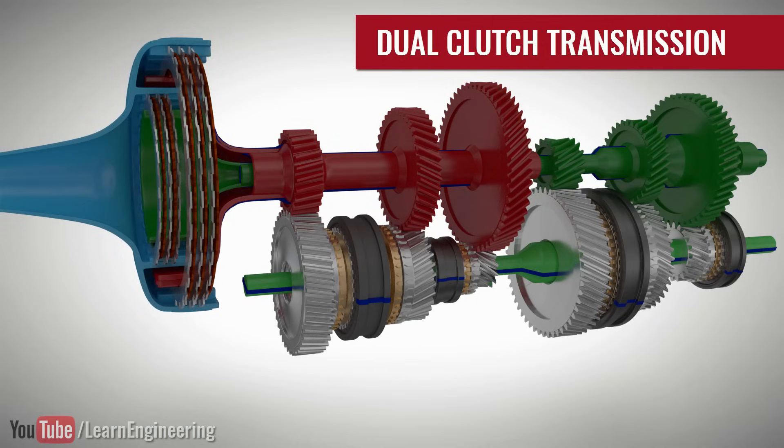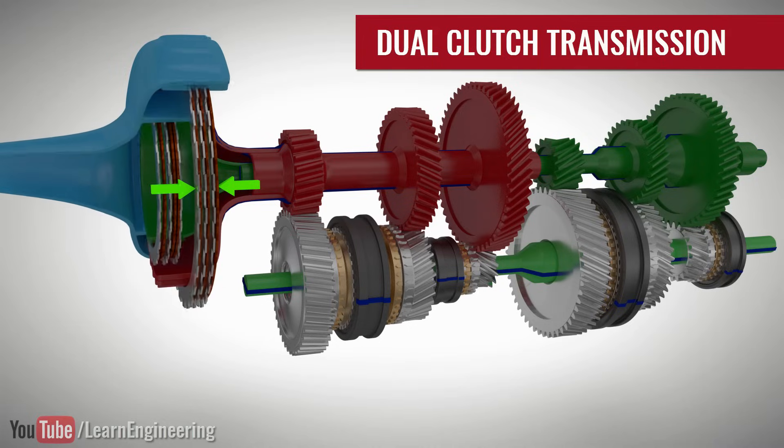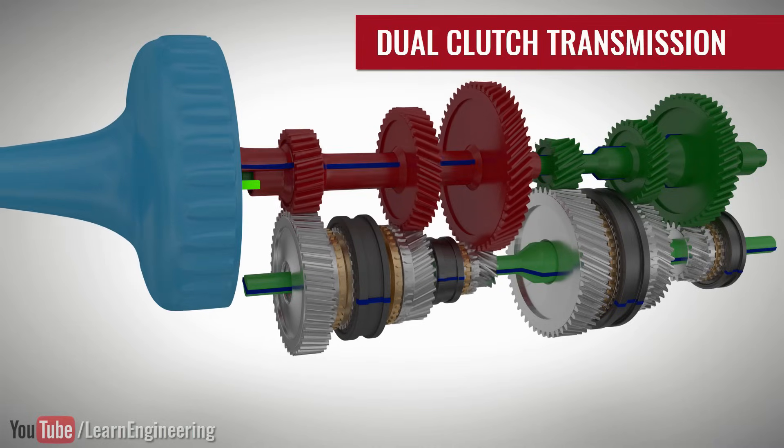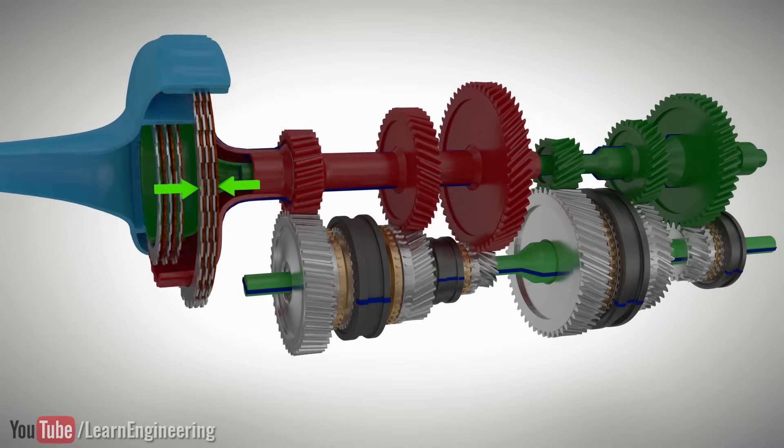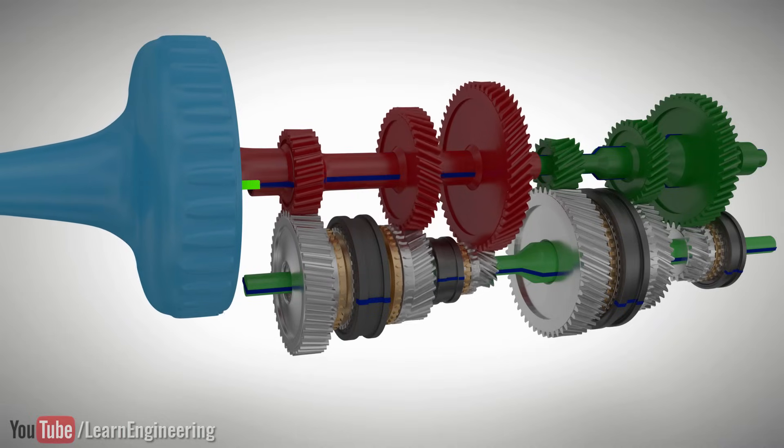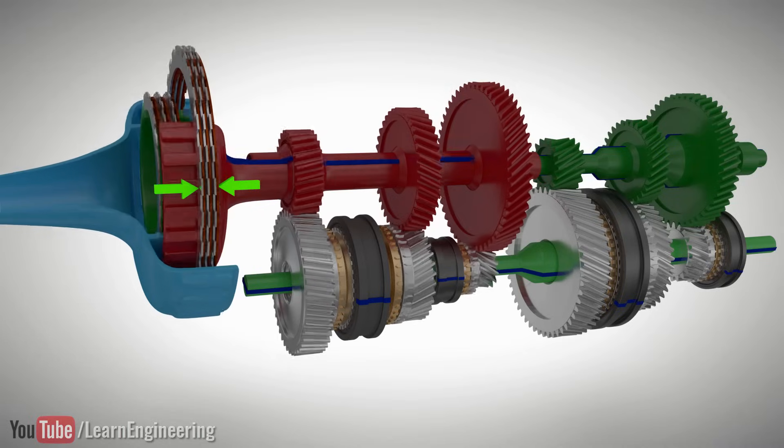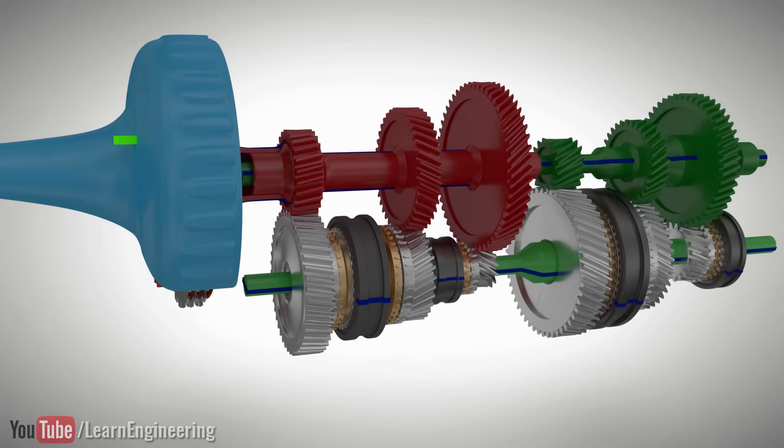If you press the outer clutch pack, the power will transmit to the red set. On the other hand, if you press the inner clutch pack, the power will transmit to the green set.